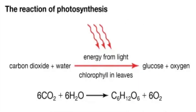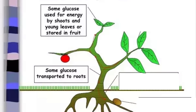Energy from sunlight splits the water molecule into hydrogen and oxygen. Oxygen is released in the air and hydrogen is used with carbon dioxide to make sugar. The sugars are moved from the leaves to other parts of the plant where they are stored.